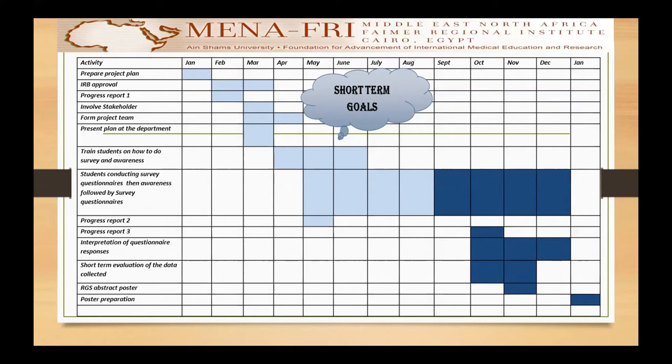I'm starting now to do the awareness process, but I had to slow down because the students have their exams, so the process has slowed recently. I think I achieved my short-term goals, which were mainly to raise awareness among students, train them on the problem and the survey, and estimate the awareness of community members toward the problem. I'm now going to start the awareness process through the students to the community members, then I will do the post-awareness survey.